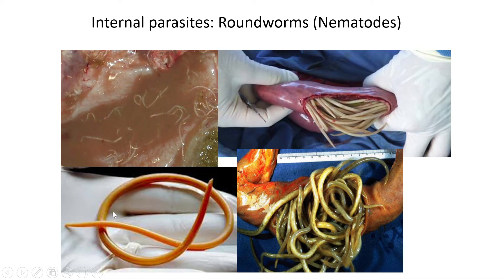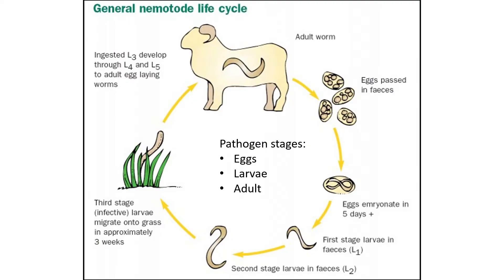Here is a close-up of what roundworms look like, and some pictures of what they look like inside the intestines of animals — usually more than one worm at the same time. What you have to remember is the life cycle of these parasites. Here is a general life cycle of a nematode or roundworm — they may give you variations in tests, but they generally look the same.